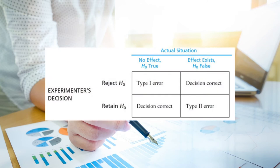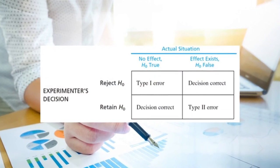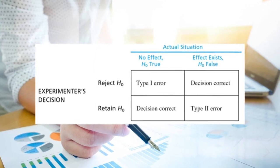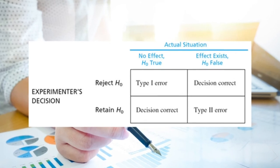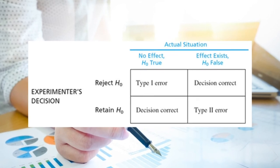In the decision matrix, when there is truly no effect (H₀ true) and we reject H₀, that is a type 1 error. When an effect truly exists (H₀ false) and we retain H₀, that is a type 2 error. Correct decisions occur when we retain a true H₀ or reject a false H₀. Type 1 and type 2 errors occur when experimental decisions go wrong.